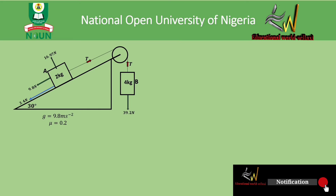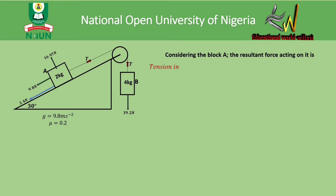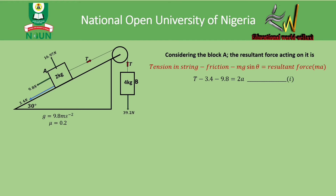Considering block A: for block A to move up the inclined plane, the tension in the string pulls it upward while the frictional force and the downward slope force oppose it. The resultant force equation for block A is: T − friction − mg sinθ = 2a. Substituting values: T − 3.4 − 9.8 = 2a, giving us T − 13.2 = 2a. We call this equation one.